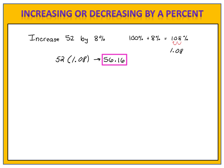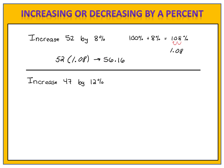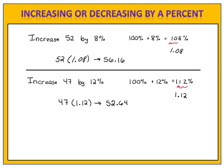56.16 is the number 52 increased by 8% — 100% of what we started with, 52, plus 8% more. Here's one for you to try: can you increase the number 47 by 12%? If we increase by 12%, we have 100% plus 12% more, which is 112%. Convert that to a decimal and our multiplier is 1.12. 47 times 1.12 gives us 52.64, which is 47 plus 12% more.